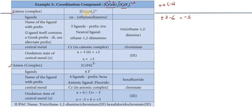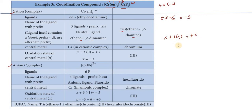The cationic part uses ethylenediamine. There is 1 ethylenediamine ligand - or 3 ethylenediamine-1,2-diamine. The central metal is chromium in a cationic complex, so it stays as chromium. The oxidation state: x plus 3 × 0 equals plus 3, so x equals plus 3, represented as Roman numeral III.